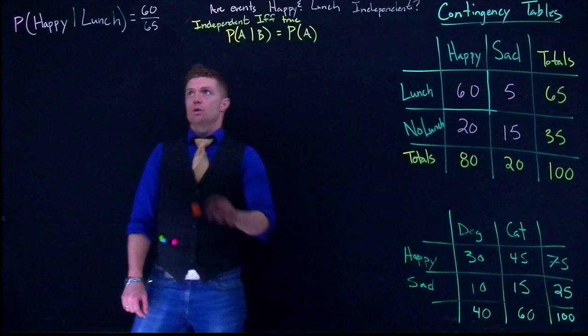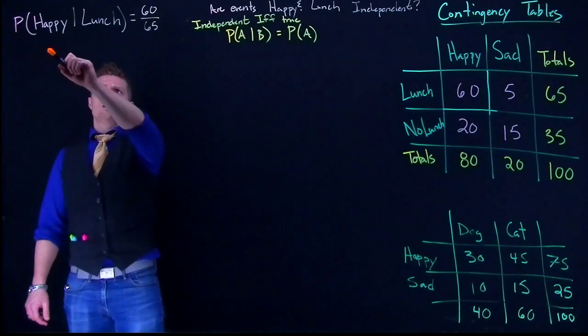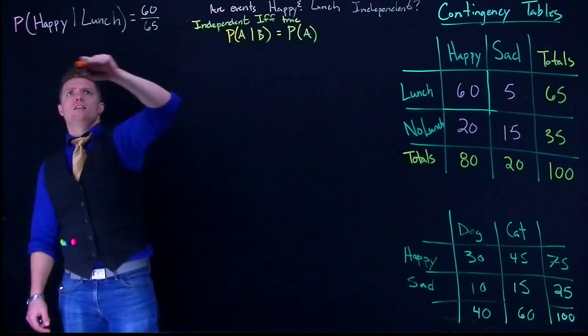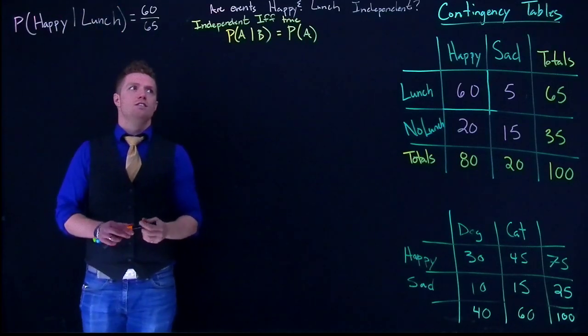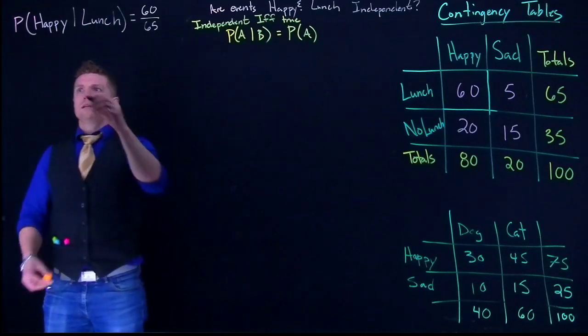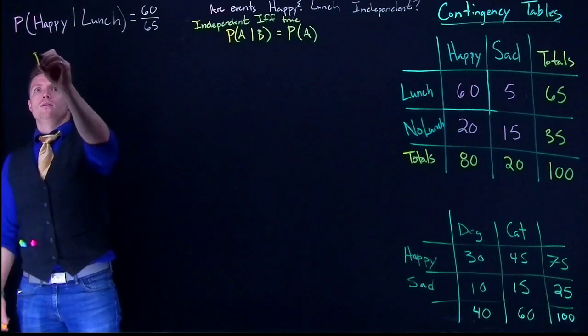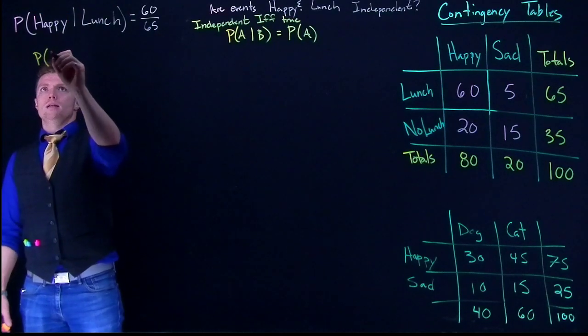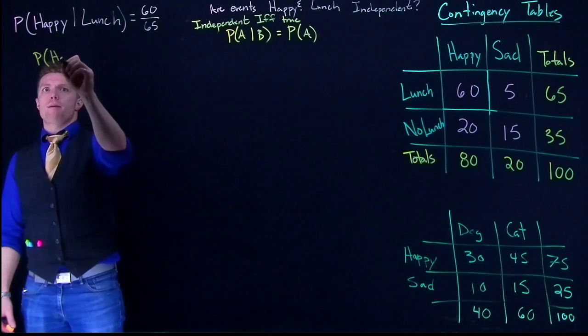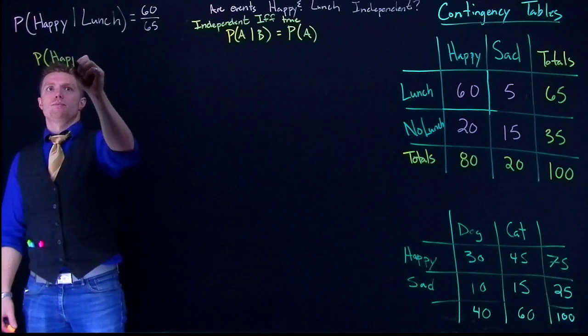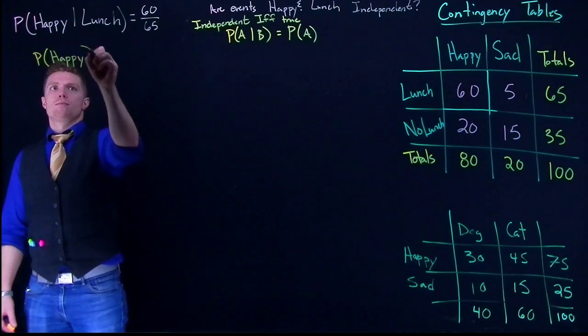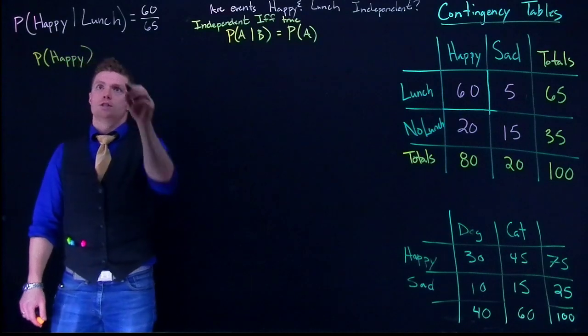So we need to determine: are the events happy and lunch independent? We know P(happy|lunch) = 60/65, but the real question is whether this equals the probability of being happy on its own.